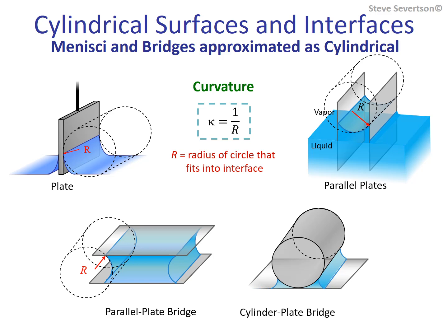Examples also include those that develop along the sides of a liquid bridge that forms between two plates, or between a plate and a cylinder and other combinations. As with the sphere, the cylinder is an idealized shape for a real meniscus. Real menisci often vary from this, sometimes significantly due to the influence of gravity. However, the examination of this shape is still quite useful in teaching capillary concepts.